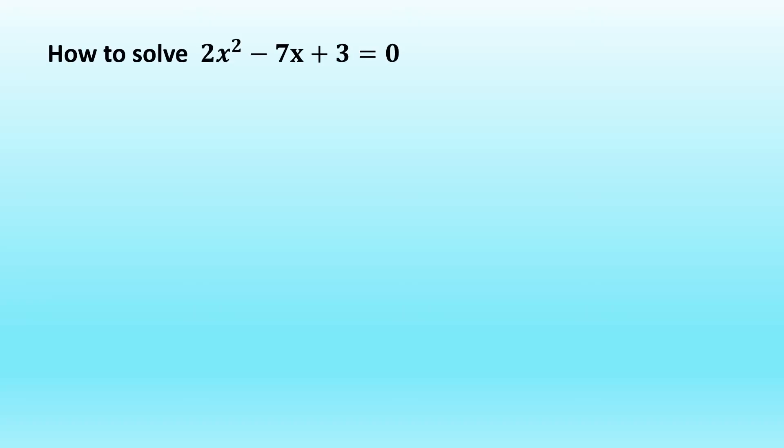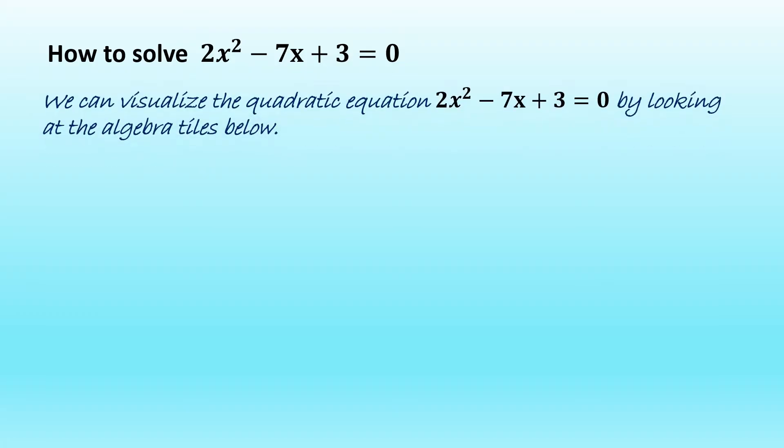How to solve 2x squared minus 7x plus 3 equal to 0? We can visualize the quadratic equation 2x squared minus 7x plus 3 equal to 0 by looking at the algebra tiles below.